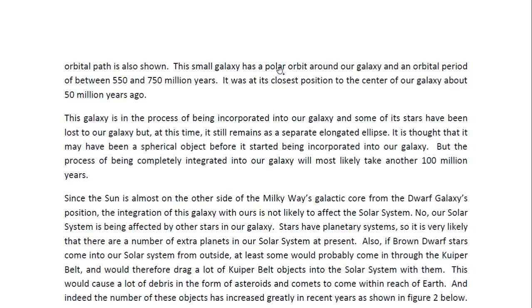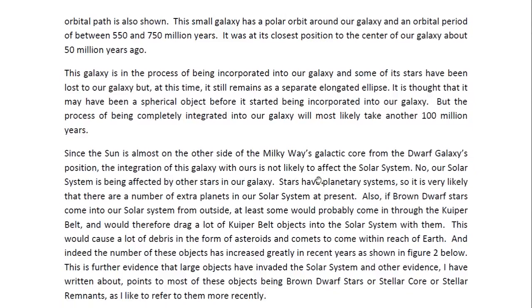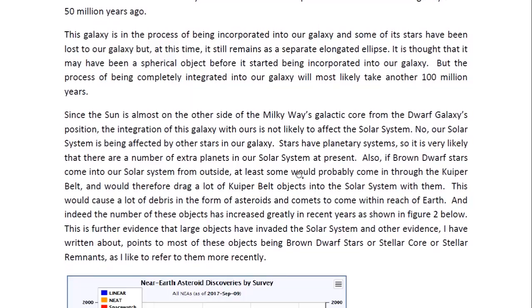It's a small galaxy in a polar orbit, and its orbital period is between 550 and 750 million years. It was at its closest position to the center of our galaxy about 50 million years ago. This galaxy is in the process of being incorporated into our galaxy — some of its stars have been lost to our galaxy — but it still remains as a separate elongated ellipse. The process of full integration will take another hundred million years. Since the Sun is on the other side of the Milky Way's galactic core, this integration is not likely to affect our solar system.